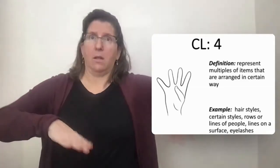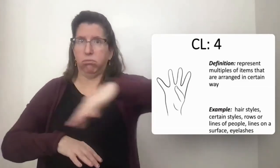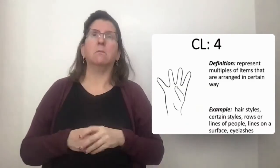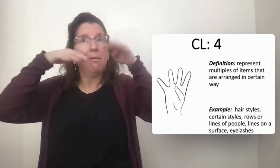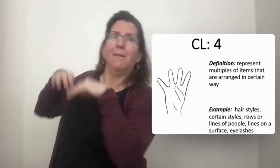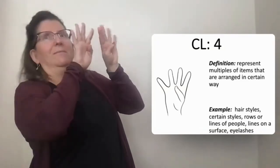There could be rows on a surface, like your garden is planted in rows. It can also reflect your eyelashes, so the eyelashes flutter. That's how a classifier 4 can be used.